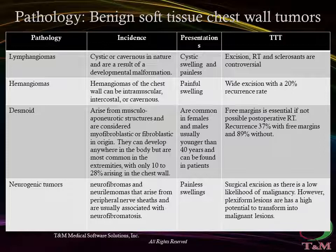Hemangiomas of the chest wall can be intramuscular, intercostal, or cavernous. They tend to occur in younger patients around 30 years of age and present as painful masses. Treatment is complete surgical excision if symptomatic; local recurrence rates are as high as 20%. Desmoid tumors arise from musculoaponeurotic structures and are considered myofibroblastic or fibroblastic in origin. They can develop anywhere in the body but are most common in the extremities, with only 10-28% arising in the chest wall. Desmoids can also occur in sites of previous trauma, scar, or radiation.